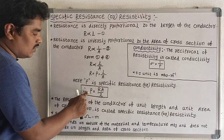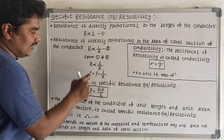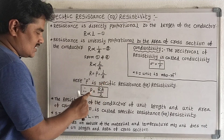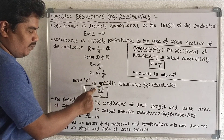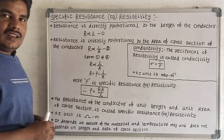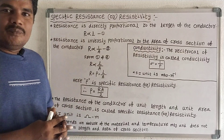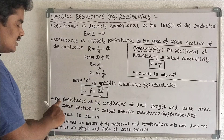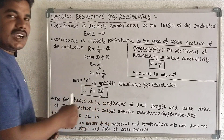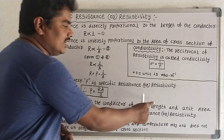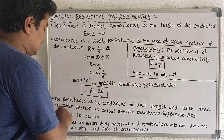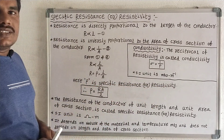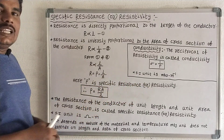So, Rho is equal to R A by L. Specific resistance Rho is equal to the formula R A by L. From that formula we can define specific resistance: the resistance of the conductor of unit length and unit area of cross section is called specific resistance or resistivity.